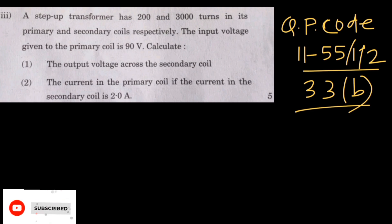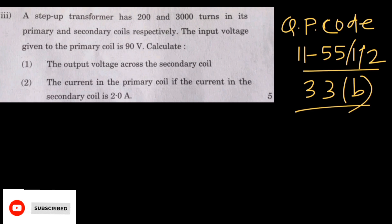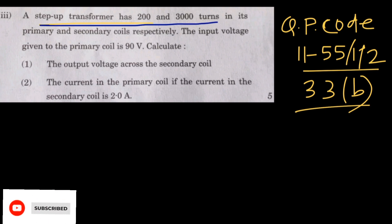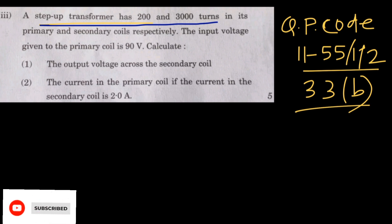We will read this question and understand how to solve it properly. The question states: a step-up transformer has 200 and 3000 turns in its primary and secondary coil respectively. We read this carefully and then note what is given. There are 200 turns in the primary coil and 3000 turns in the secondary coil. The input voltage given to the primary coil is 90 volts.